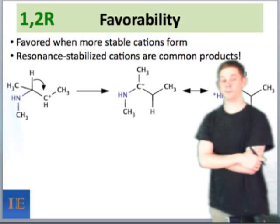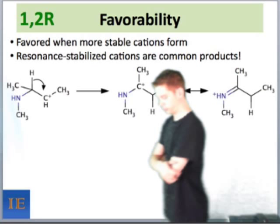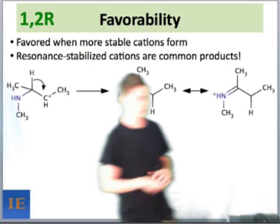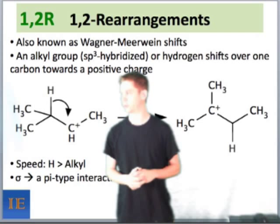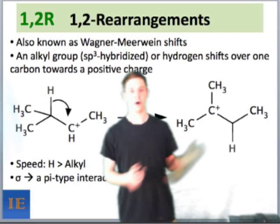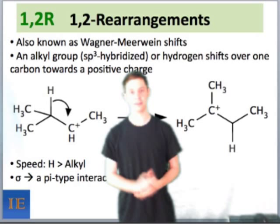The favorability of 1-2-R steps is very important to think about. 1-2-Rs are favored only when more stable cations form. The classical example is favored because a more stable, more substituted cation is formed. On the right we have a secondary cation, whereas the product of the rearrangement on the left is a more stable tertiary cation. When you see this, you know that a 1-2 rearrangement is reasonable and you should think about it as a mechanistic possibility.